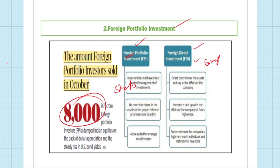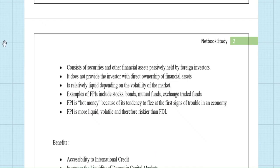FDI gives more power to the investor, including handling administrative and day-to-day activities. FPI, since it invests only on shares and securities, money can be taken out anytime. FPI has a direct influence on the world economy — if the world economy is strong, you see more investment in emerging economies. If there is disturbance in the western economy, FPI goes out of countries very quickly. So FPI is considered 'hot money.' It does not provide direct ownership of financial assets of the company and is relatively liquid.